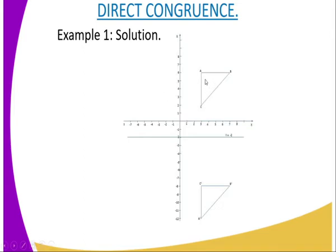In this case we have the object — the upper triangle — and it is reflected along y equals negative two. You can see that the image of A is at the point three, negative twelve. The coordinate of C falls at three, negative eight, and B falls at eight, negative eight.